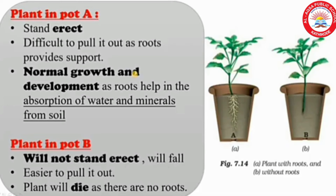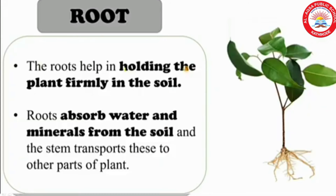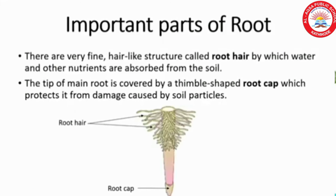From this activity, we can conclude that the root has a main role for the development of the plant. Now we can discuss functions of root. The first function: roots help in holding the plant firmly in the soil. The second one: roots absorb water and minerals from the soil, and the stem transports these to other parts of the plant.